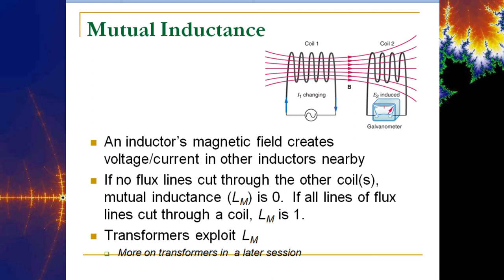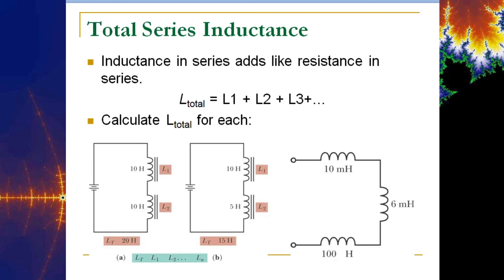We use the symbol L for inductors in circuits. In an RL circuit, there's both resistance and inductance. Inductors in series add like resistors in series — so three inductors of 100 H, 10 mH, and 6 mH combine to approximately 100.016 Henrys. Inductors in parallel combine like resistors in parallel — two 10 Henry inductors in parallel combine to give 5 Henrys.